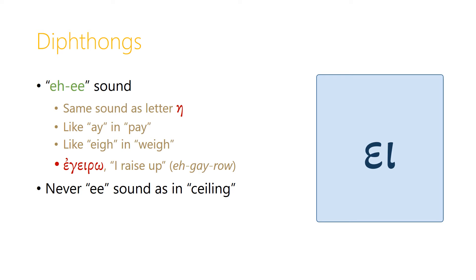The combination epsilon-iota makes the 'a' sound, which in our pronunciation is the same as the letter eta. This sounds like the 'ay' in 'pay', or like our English word 'way', and a Greek word like 'ageiro', which means 'I raise up', uses that same 'a' pronunciation for epsilon-iota in the middle. Epsilon-iota never combine to make the 'e' sound that we have in the English word 'ceiling' — it's always the 'a' sound.